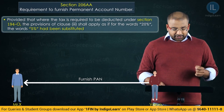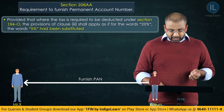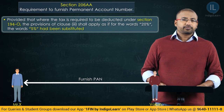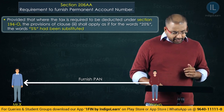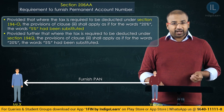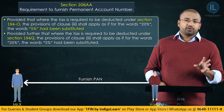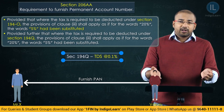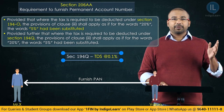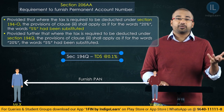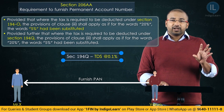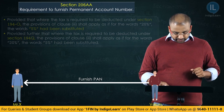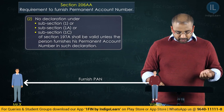There is a proviso: where tax is required to be deducted under Section 194O, the provisions of clause 3 shall apply as if for the words '20%' the words '5%' has been substituted. Similarly, a further proviso: where tax is required to be deducted under Section 194Q — whose rate was 0.1% — the intention of that section itself was disclosure of transaction, so they said don't make it 20%; that would be torture. So in these two sections, 194O and 194Q, that 20% has been substituted by 5%.